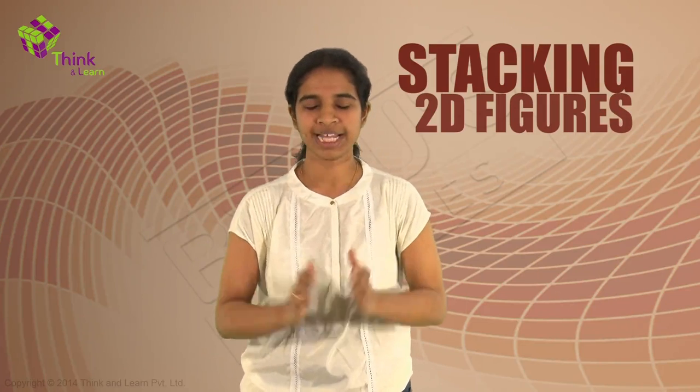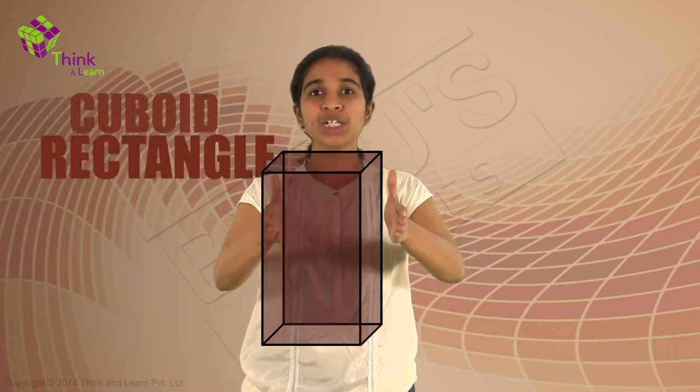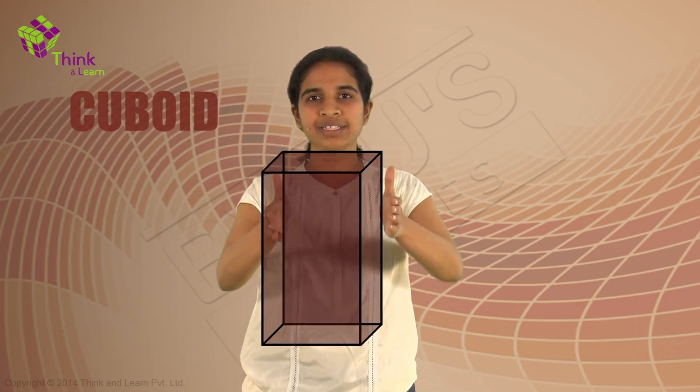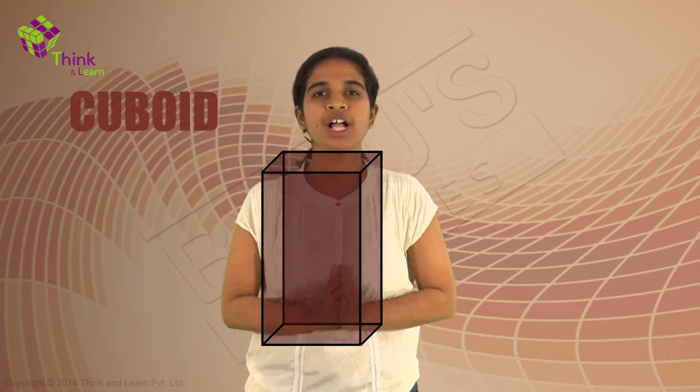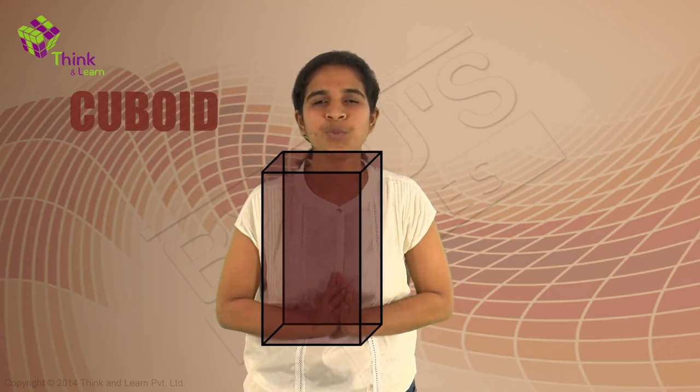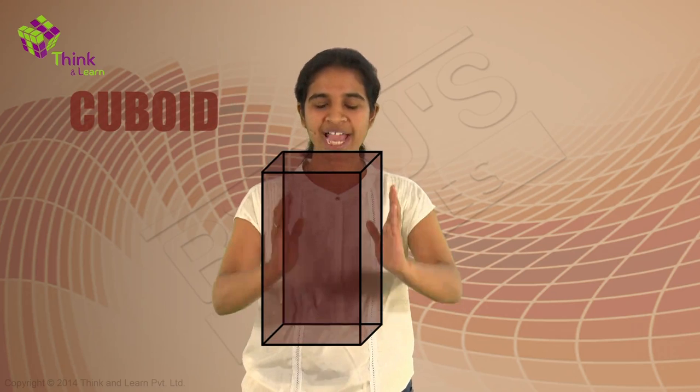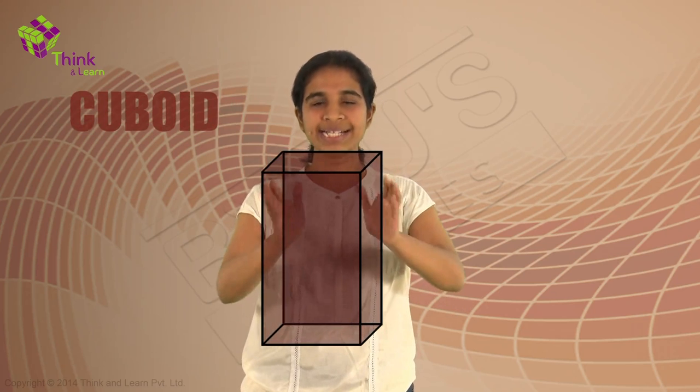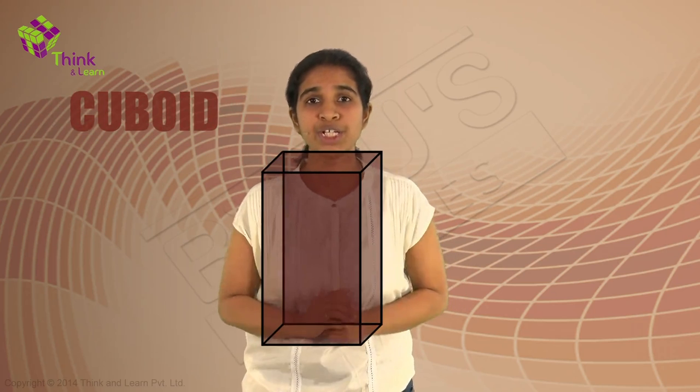So first, let's try to make solid solids. We said we can make solid solids if we start stacking 2D figures up. Let me start with a rectangle. If we stack rectangles up, what do we get? You get a cuboid. So you stack a lot of rectangles up, you get a cuboid.